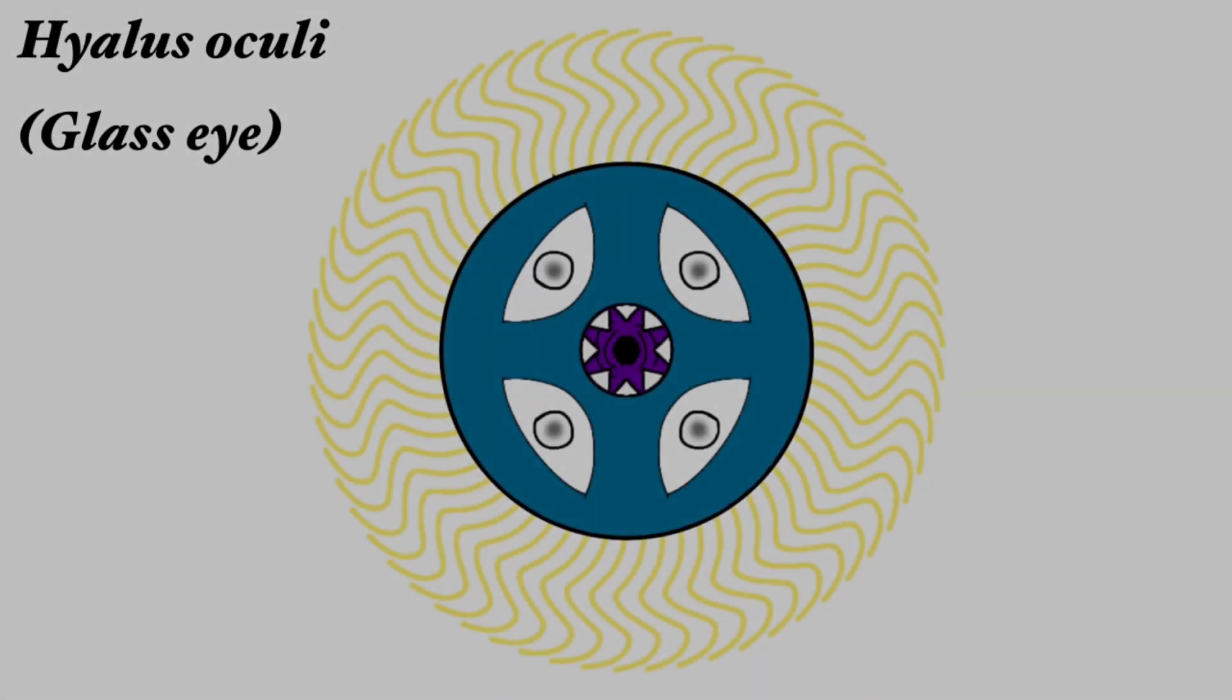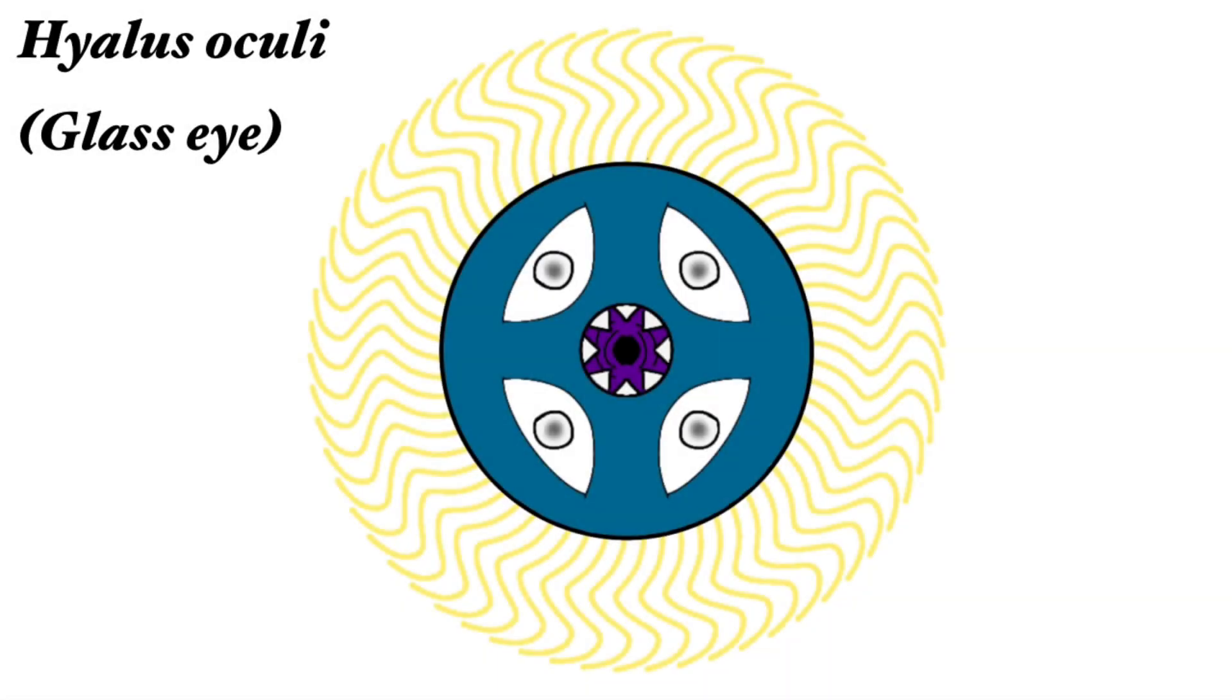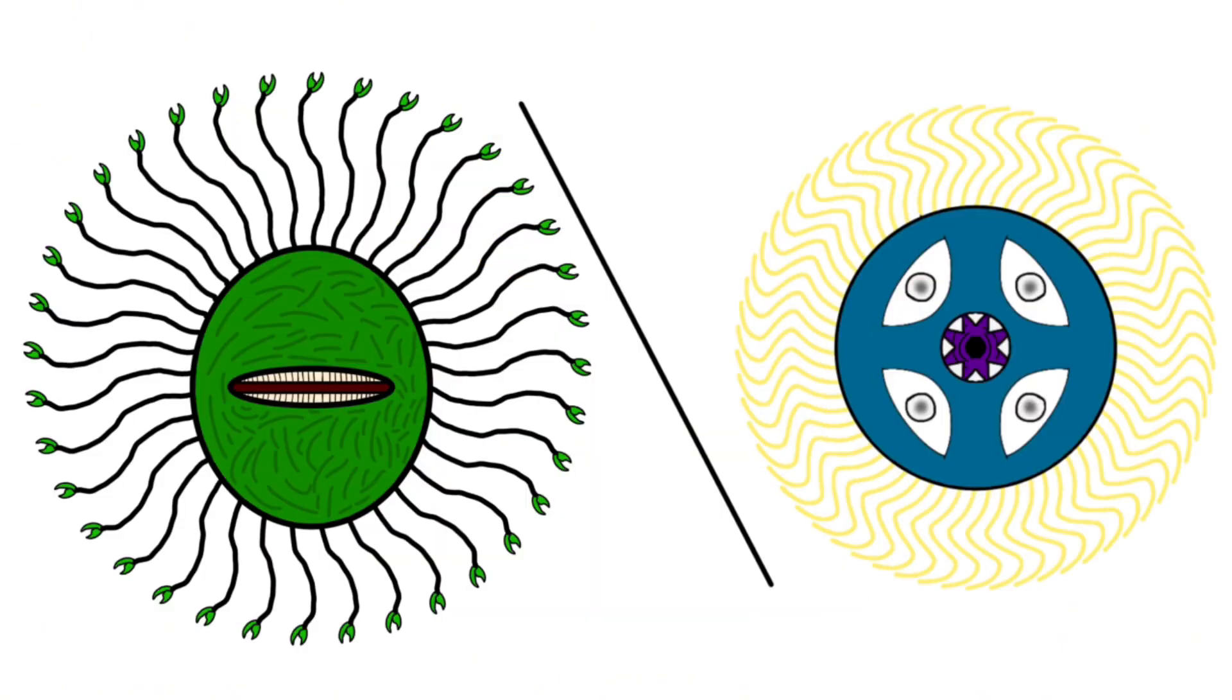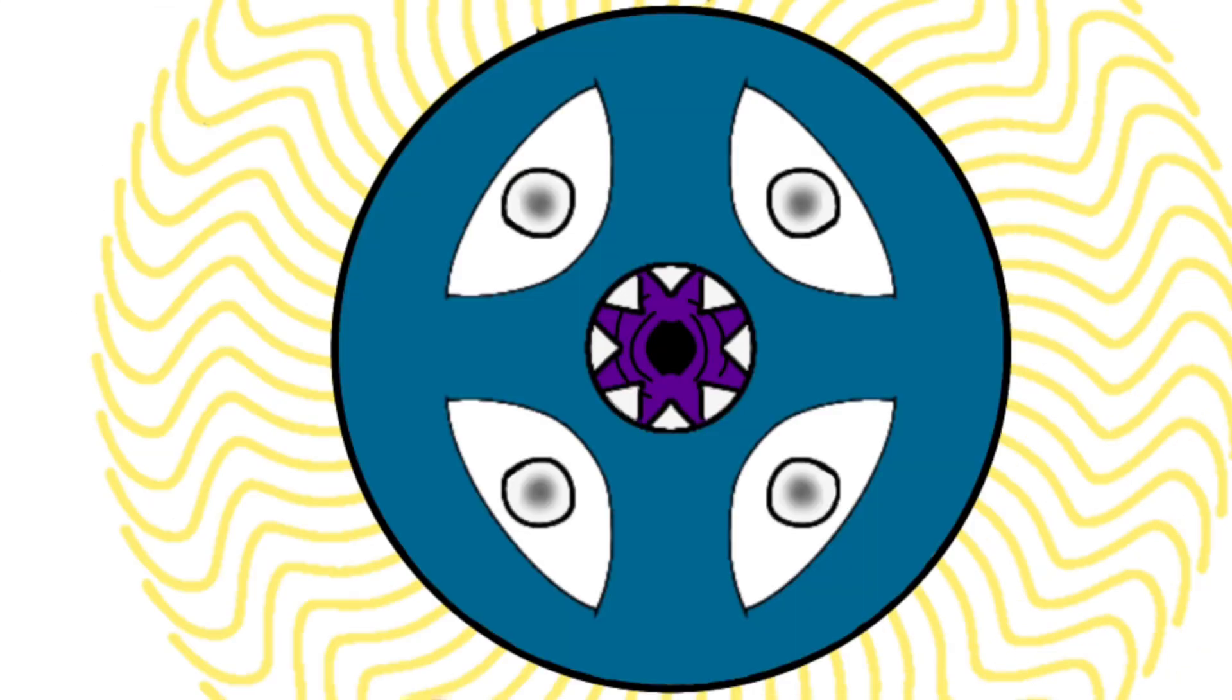The next member of Cellura to talk about is Hyalus oculi, who would not survive the connection extinction event. Hyalus oculi is different in two major ways, one being the lack of claws or pincers, instead the arms just end. And two is that Hyalus has four large eyes, greatly enhancing its ability to find food and avoid becoming it.